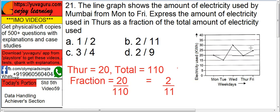So what is it on Thursday? 20. What is the total? Add this: 1, 2, 3, 4, 5. You will get 110. So the fraction equals 20 upon 110, which simplifies to 2 upon 11. So the answer is B.